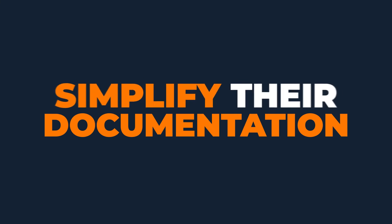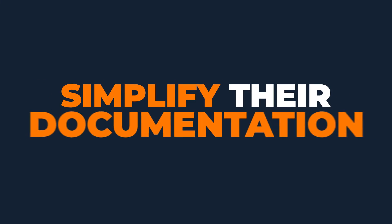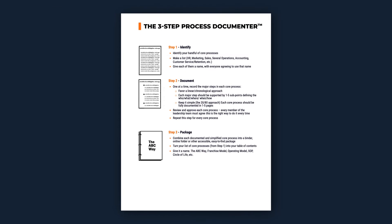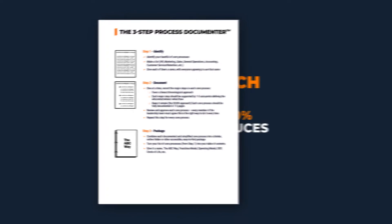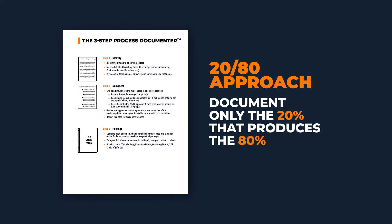Instead, this company needed to simplify their documentation. In EOS, we teach the Three-Step Process Documenter, which teaches you to document your processes using the 20-80 rule. That means that you should document only the 20% that produces the 80% results and compliance each and every time.